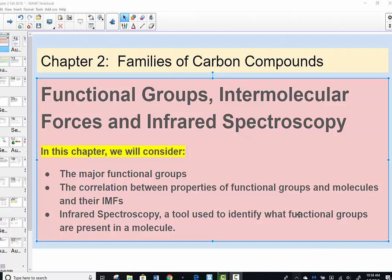This lesson is going to talk about our chapter in organic chemistry called Families of Carbon Compounds. We're going to look at functional groups, the intermolecular forces between functional groups and intermolecular attractions in general, and then a tool used to identify specific functional groups in molecular compounds known as infrared spectroscopy.